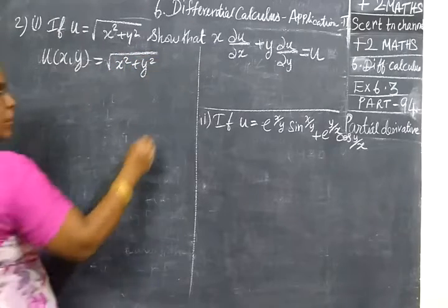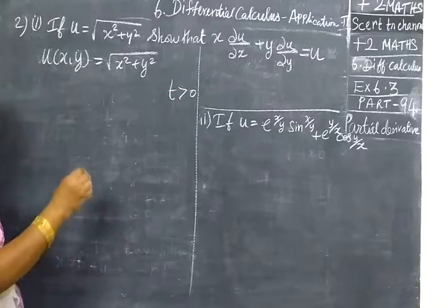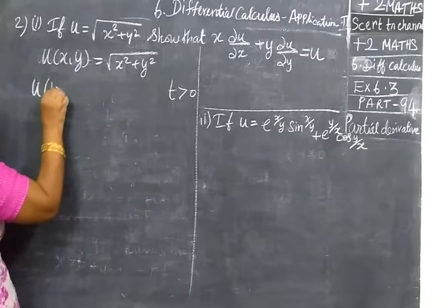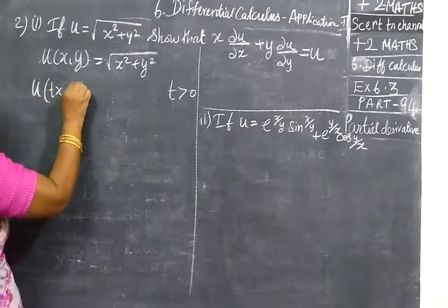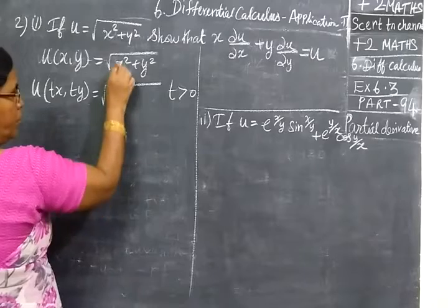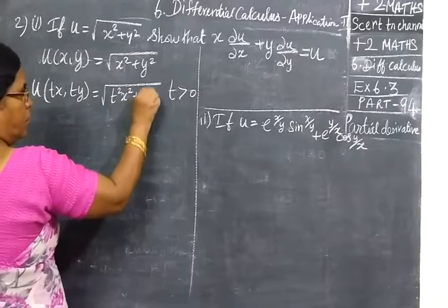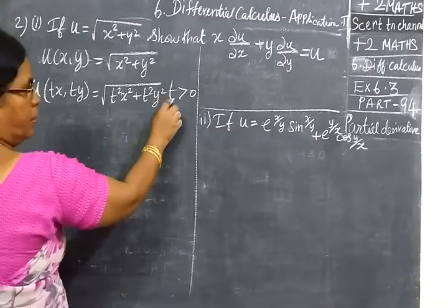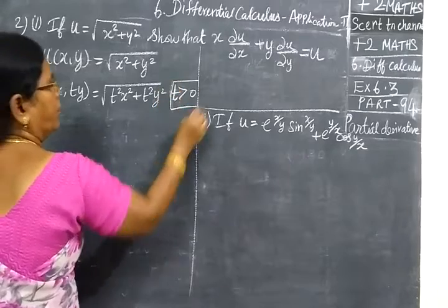Now, we are taking for t greater than 0. t greater than 0, where x and y are multiplied by t. So t is for the variables x and y. I am multiplying t. So here also it is the same: x square becomes t square x square plus t square y square.